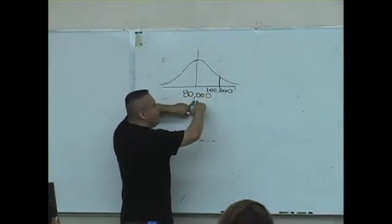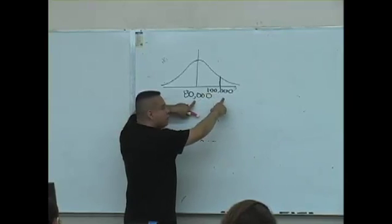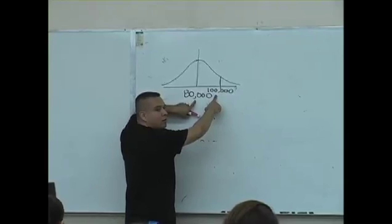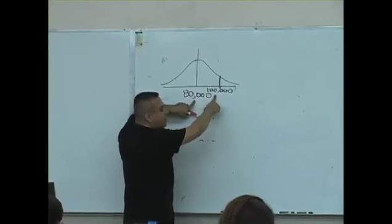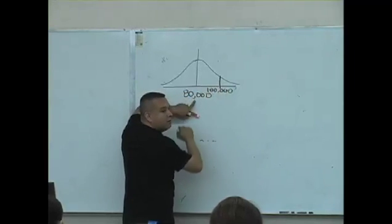Isn't 100,000 to the right of 80,000 because it's larger? So it's to the right. So values that are at least 100,000 are where in relation to the 100,000? To the right or to the left? To the right.